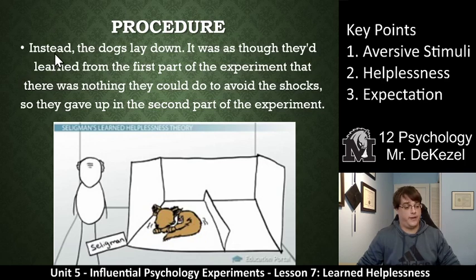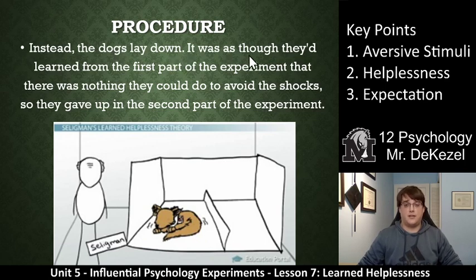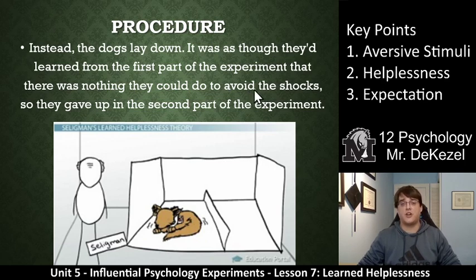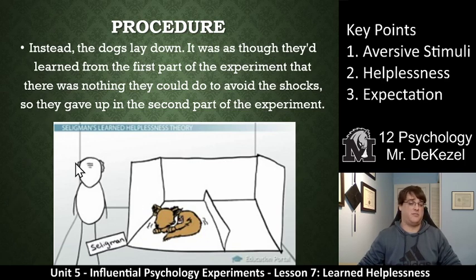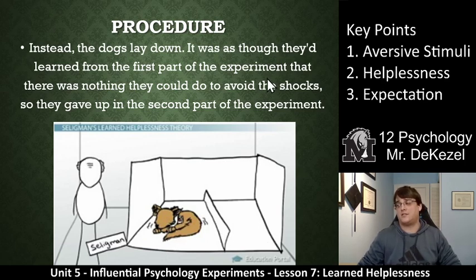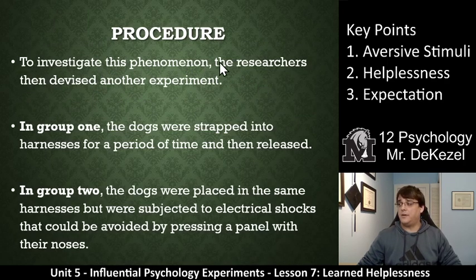There would be a bell, there would be a shock, and there was nothing they could do to stop it. So instead, the dogs just lay down. It was as though they had learned from the first part of the experiment that there was nothing they could do to avoid the shocks — so they gave up. They didn't even try to jump over the wall. They just accepted that the shocks were going to happen, even though escape was right there.